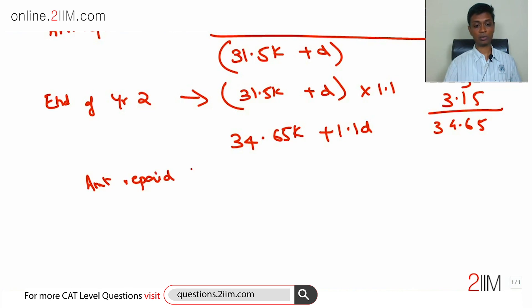Now what does he end up paying? Amount repaid—the amount he ends up paying in year two is 18,000. Out of 34.65k plus 1.1D, he pays off 18. What is the amount now outstanding? This 0.65 remains as is. 34 minus 18 is 16.65.